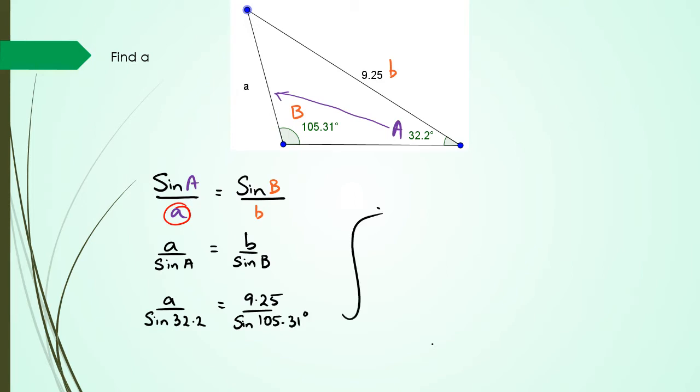So rearranging this I can say that A equals 9.25 multiplied by sine 32.2 divided by sine 105.31 degrees which means A is equal to 5.11.